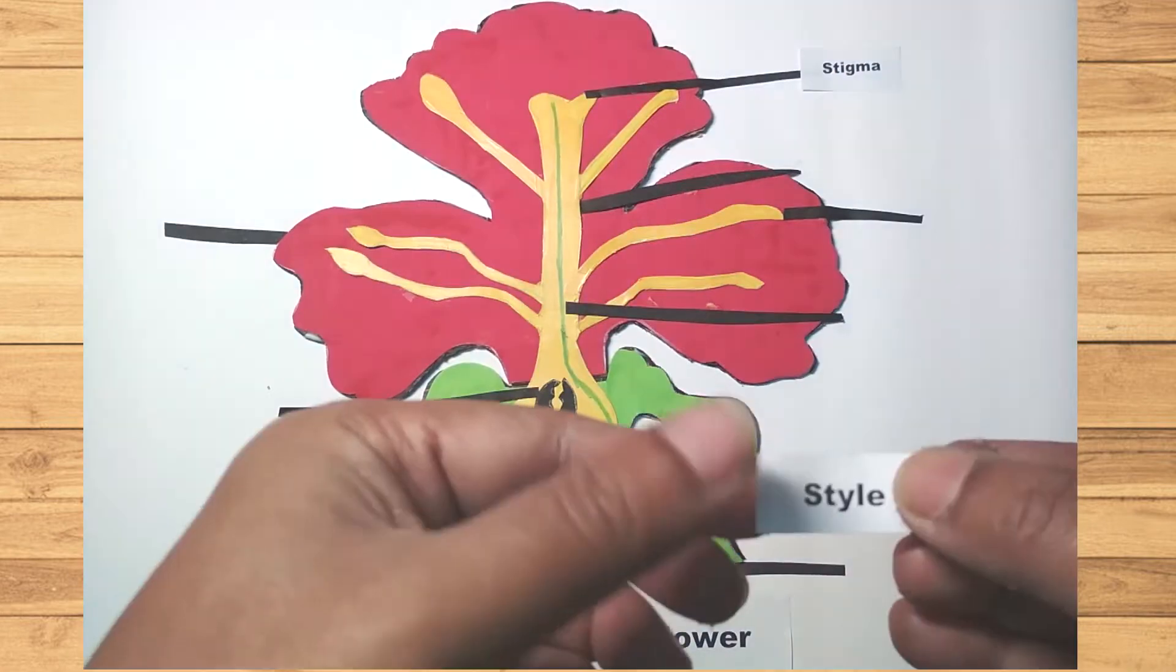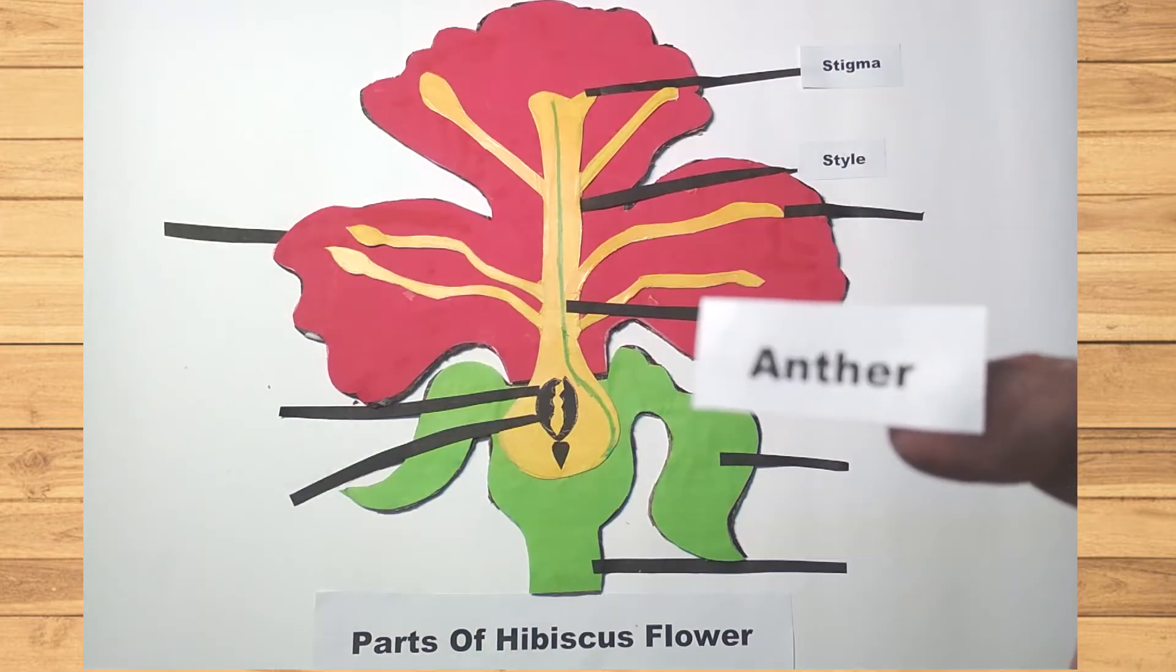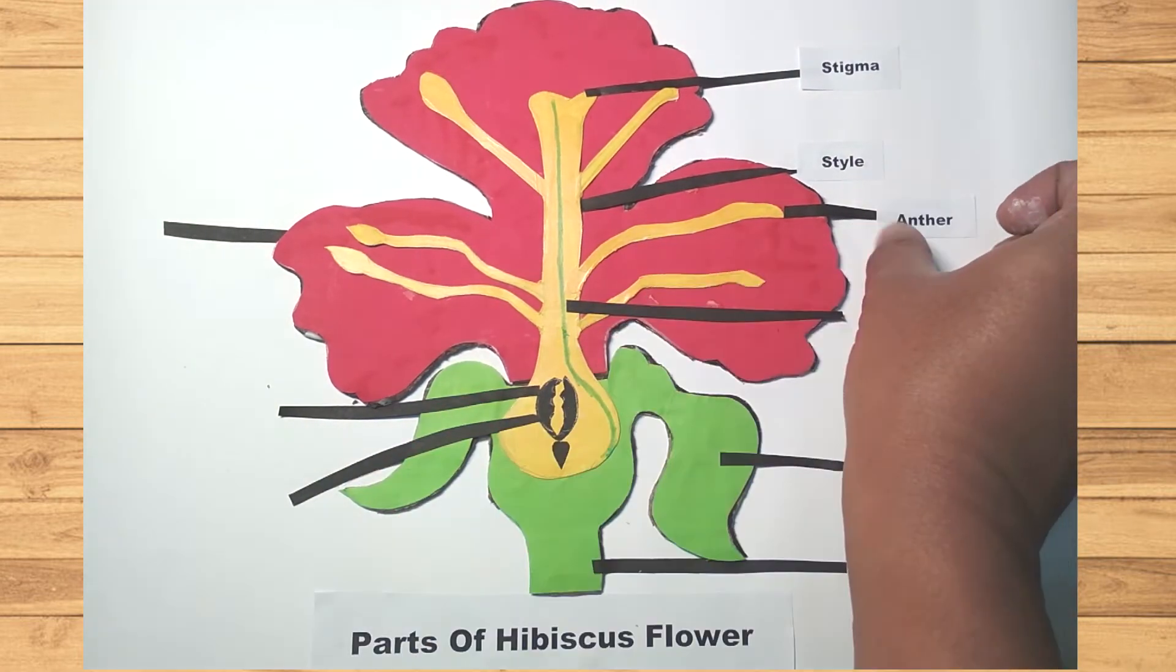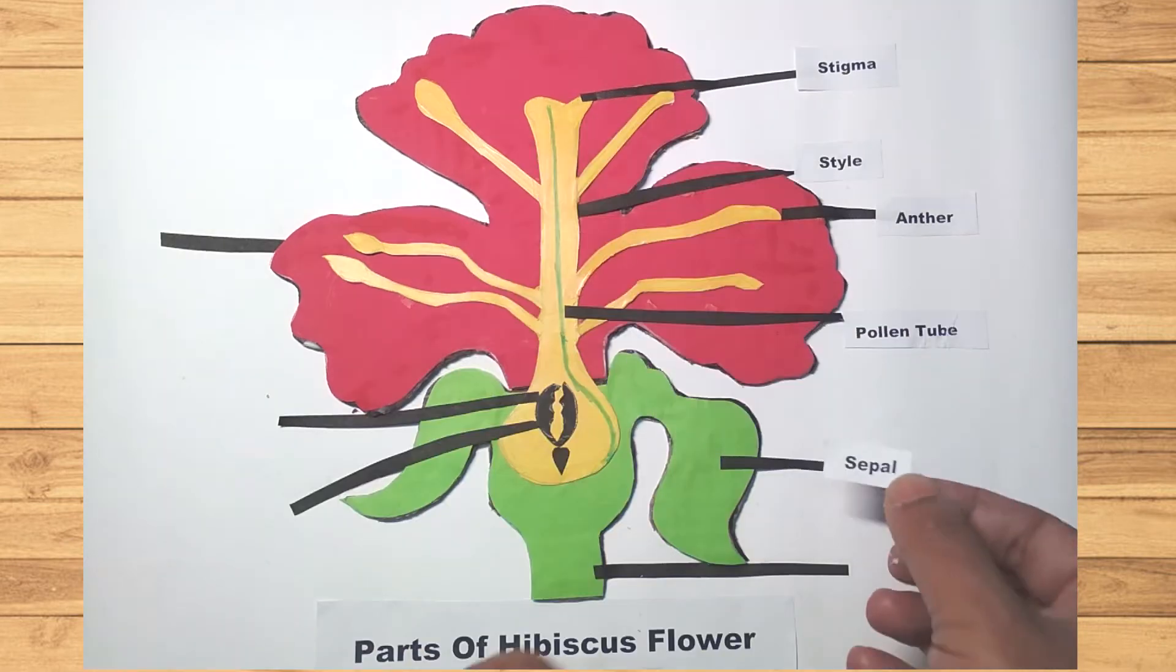Each part of the flower including male and female parts must be labeled. You must write a brief description of each labeled part of the flower in at least two sentences.